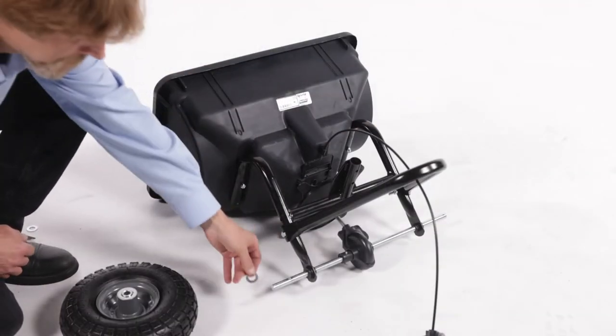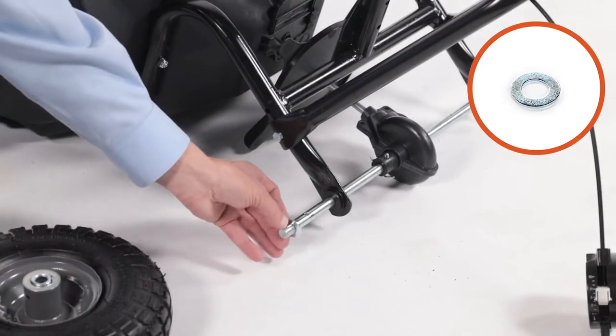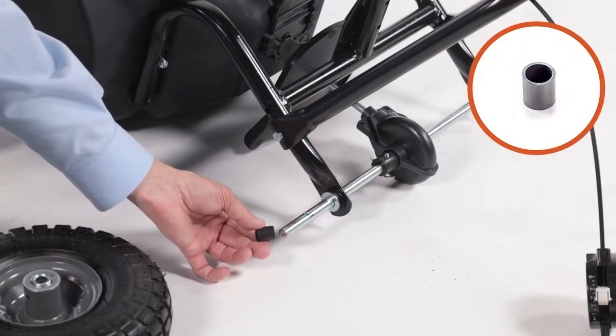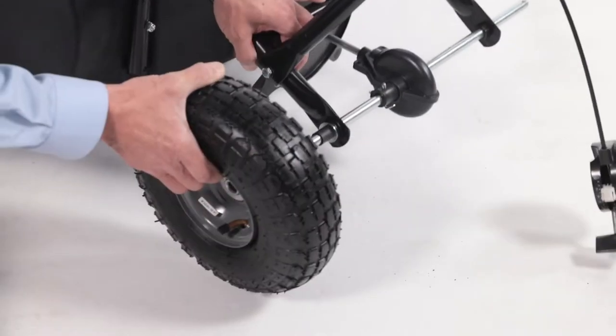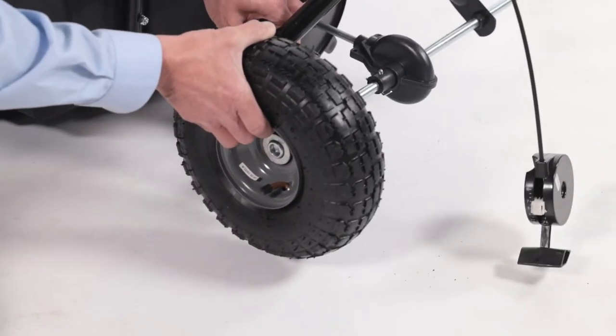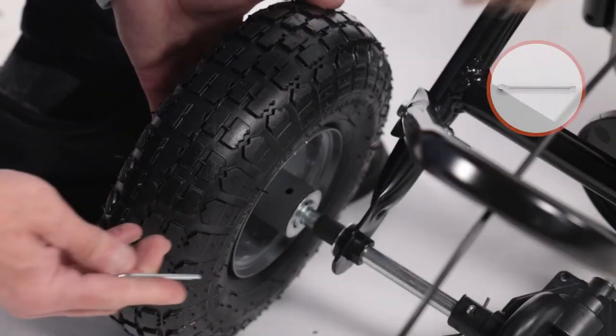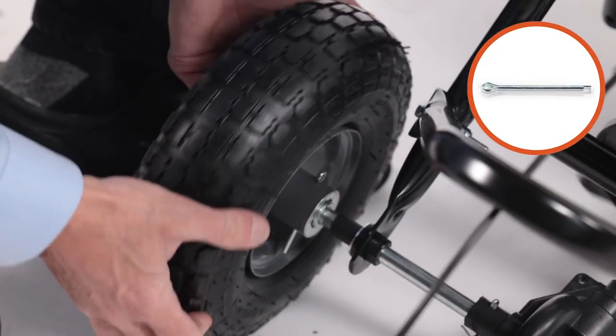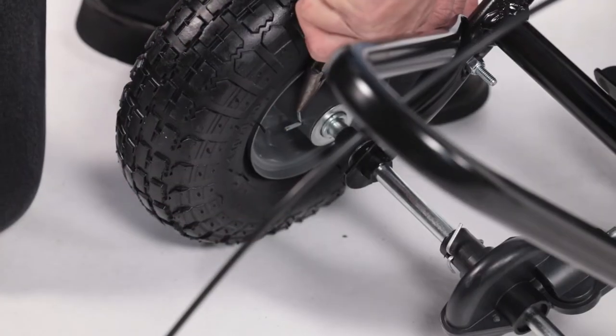Now, on the left side of the axle, slide on a large washer, Part D, followed by a plastic spacer, Part K. Next, slide on a wheel, Part Q, with the valve stem facing out. Next, insert a 3 1⁄4-inch cotter pin, Part N, and bend the ends out to secure it.